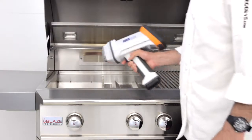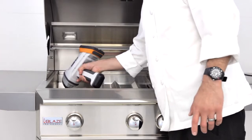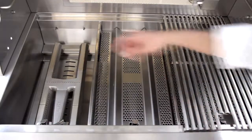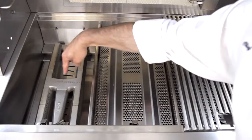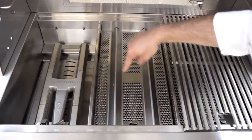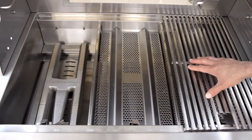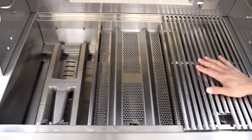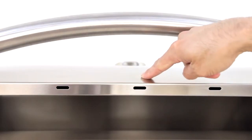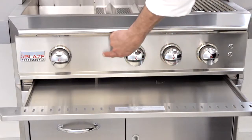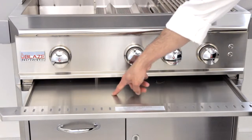Now we'll perform our XRF test on the Blaze Professional Grill. The test showed that the firebox, burners, flame stabilizers, and cooking grids are all 304 stainless steel. The inside and outside of the hood are 304 stainless steel, and the control panel and drip pan also tested as 304 stainless steel.